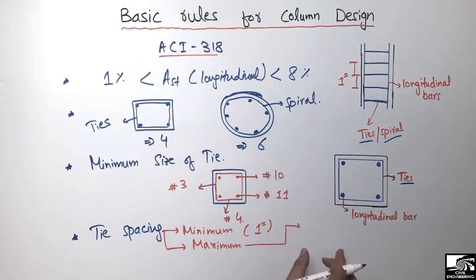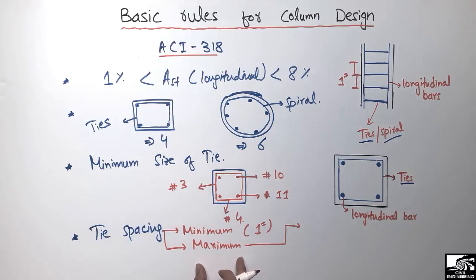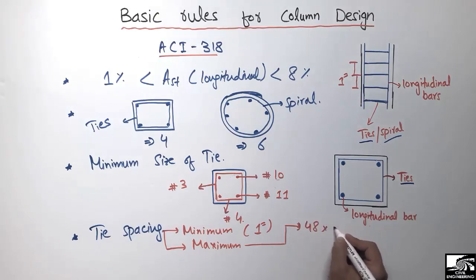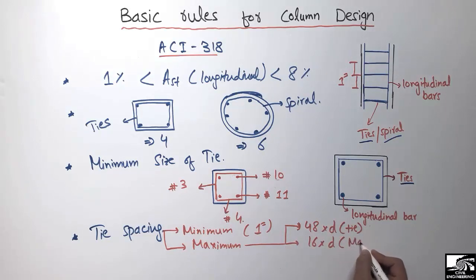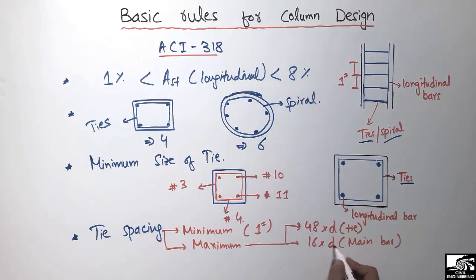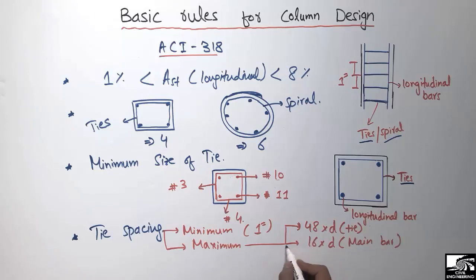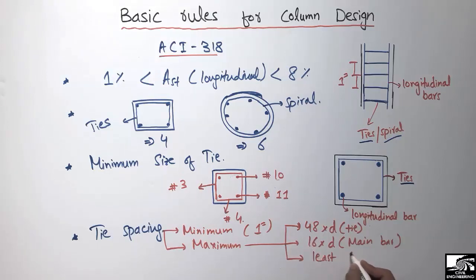In case of the maximum spacing between ties, there are three different criteria, and the minimum of these three criteria should be the maximum spacing between ties. The first criterion is 48 times the diameter of the tie bar. The second is 16 times the diameter of the main bar. The third criterion is the least column dimension.